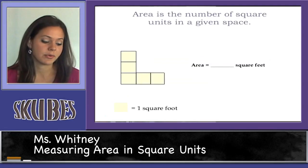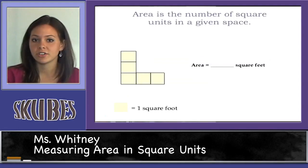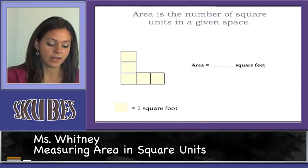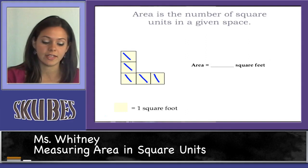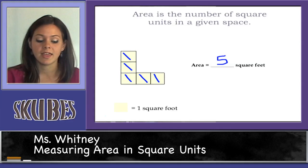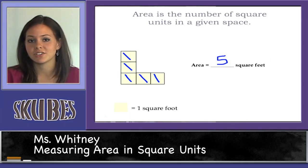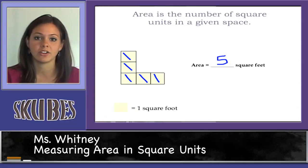And here's our last example. We're still measuring in square feet. We have 1, 2, 3, 4, 5 square feet. The area of this shape is 5 square feet. And that concludes our lesson on measuring area using a square unit.